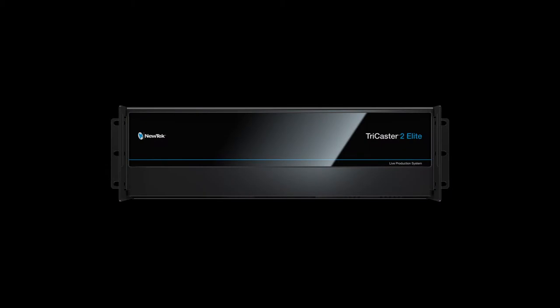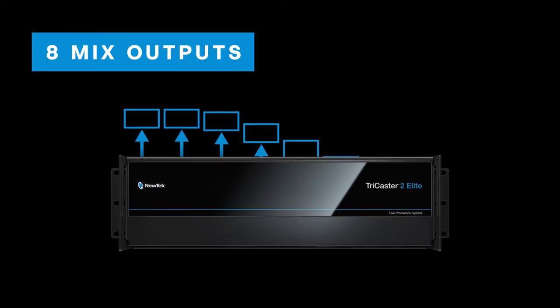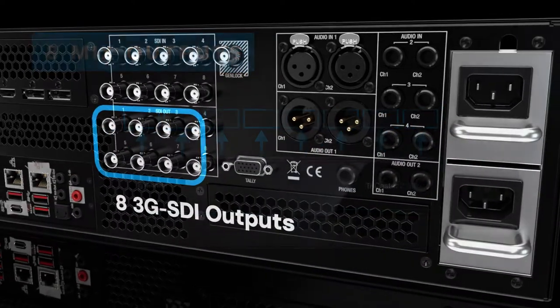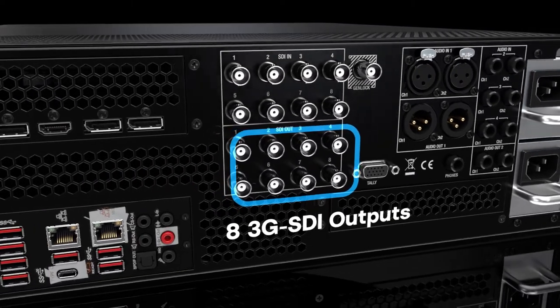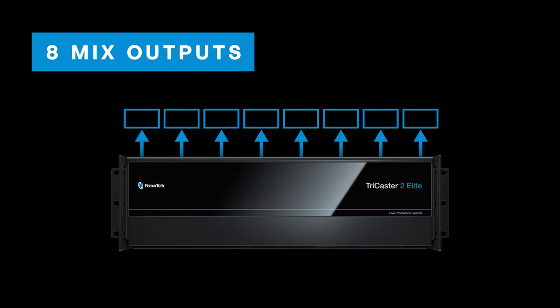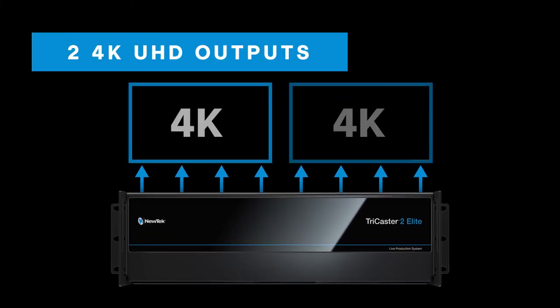Once your show is ready to deliver to your audience, TriCaster 2 Elite gives you more options than ever to distribute your content. With 8 individual outputs, you can produce multiple video programs from one system. Then output your show through the 8 1080 60p 3G SDI hardware outputs for connecting to monitors, projectors, video walls, digital signage, and more. These connections also give you the flexibility to output two 4K Quad Link Ultra HD connections.